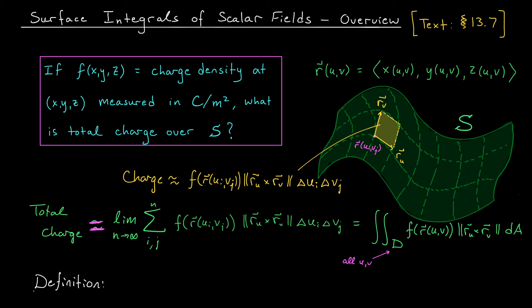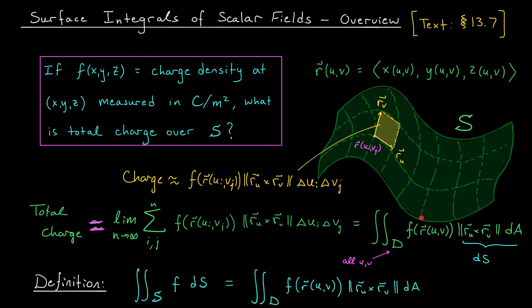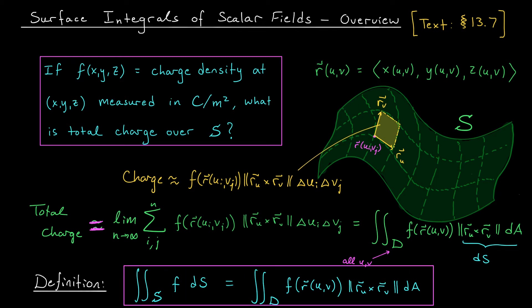This is going to be the definition of our surface integral. We define the surface integral of a scalar field f over a surface S using this notation: the double integral over S of f times a tiny change in surface area, which I'll call dS. Note that the S in the subscript refers to the surface, while dS represents a tiny change in surface area. We define this surface integral to be equal to that double integral. I'll make a few comments about this definition on the next slide, and then we'll jump into an example.